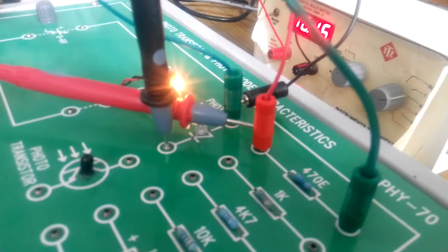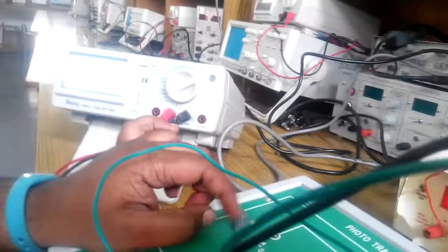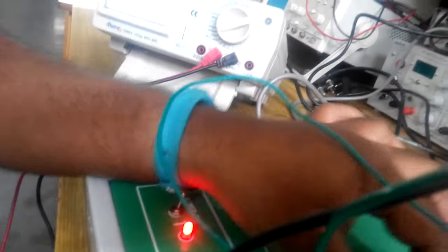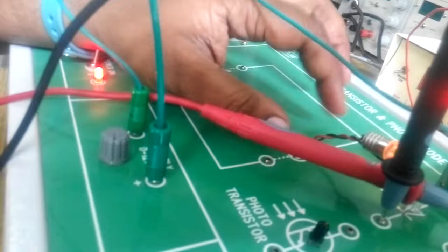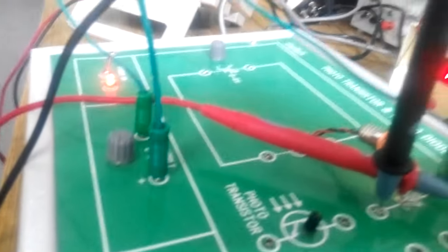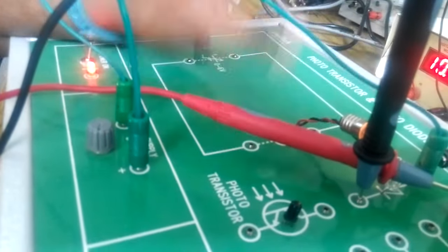Repeat the same for different values of voltage across the bulb. Here first we have done for 2 volts, then you need to do for 3 and 4 volts.